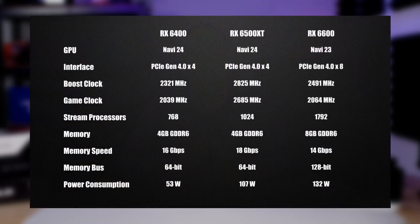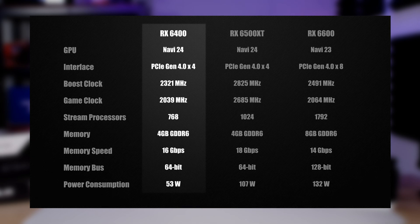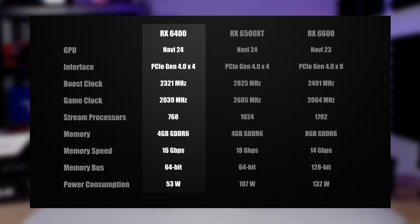There is a sliding scale on the price of these cards and they fit in well with each other, but looking at the specifications on paper we can see there's a significant difference between them all. At the bottom we have the RX 6400 — a four-gigabyte card that does suffer from some PCIe generation issues AMD established at the low end. However, it serves its place because you can get these in small form factor builds, they're quite powerful for that use case, and they run at around 53 watts with no additional power supply required.